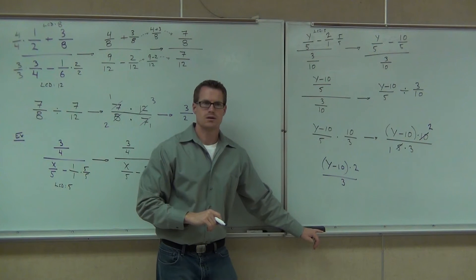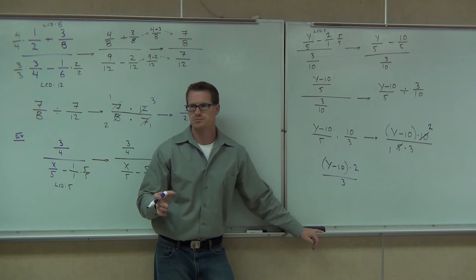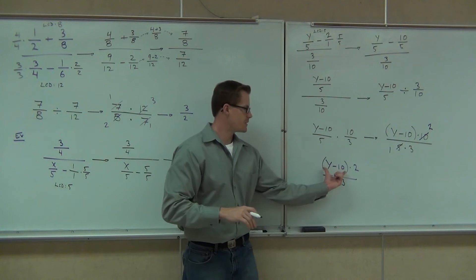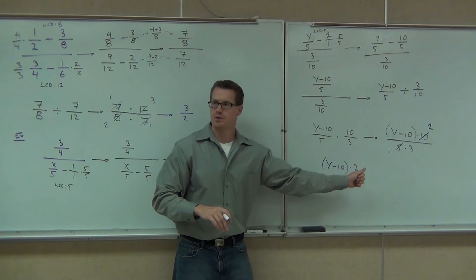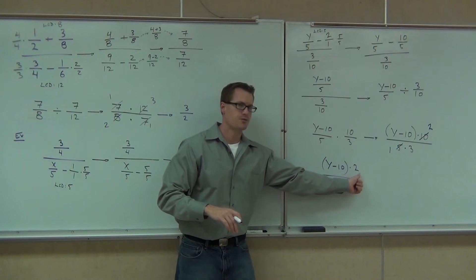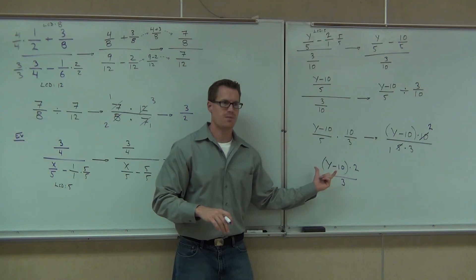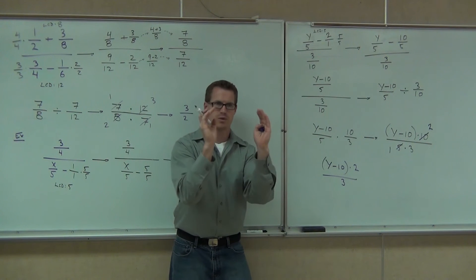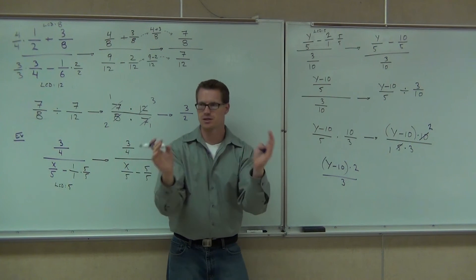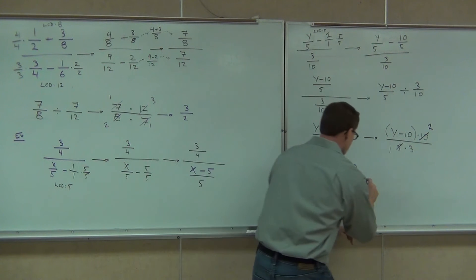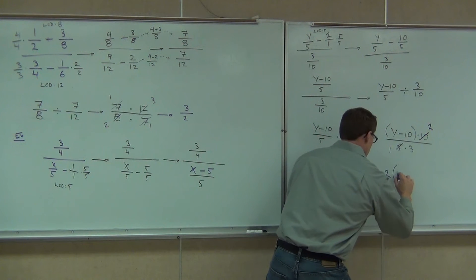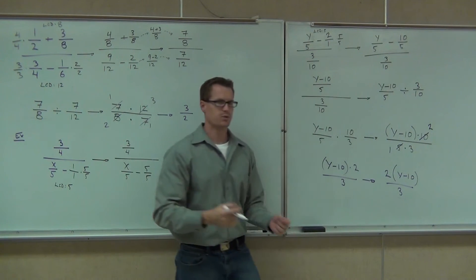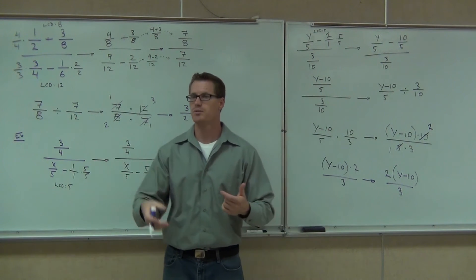Still so far so good? Now, one more thing we commonly do: it's actually uncommon to see something with parentheses times 2. We will typically put the 2 in front of the parentheses. So instead of y minus 10 times 2, you'll almost exclusively see it written as 2 times (y minus 10). That's how you'll see things in every math class. Multiplication is commutative, so I can switch it around.